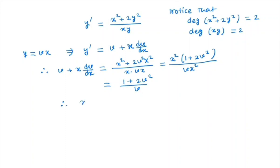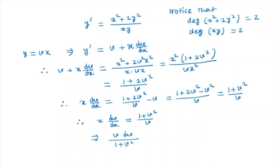So we have x dv dx is nothing but 1 plus 2v square by v minus v. So we have nothing but 1 plus v square by v. So we get x dv dx is equal to 1 plus v square by v. And we can write it like vdv by 1 plus v square is equal to dx by x.